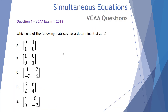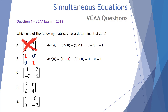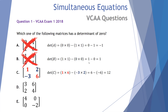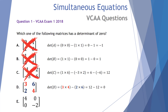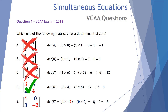Question one from VCAA Exam 1, 2018: which one of the following matrices has a determinant of zero? We calculate each determinant by multiplying the main diagonal and subtracting the secondary diagonal. Option A: 0×0 − 1×1 = −1. Not zero. Option B: 1×1 − 0×0 = 1. Not zero. Option C: 1×6 − (−3×2) = 6 + 6 = 12. Not zero. Option D: 3×4 − 2×6 = 12 − 12 = 0. That is our answer. Option E: 4×(−2) − 0×0 = −8. Confirmed — option D is the correct answer.